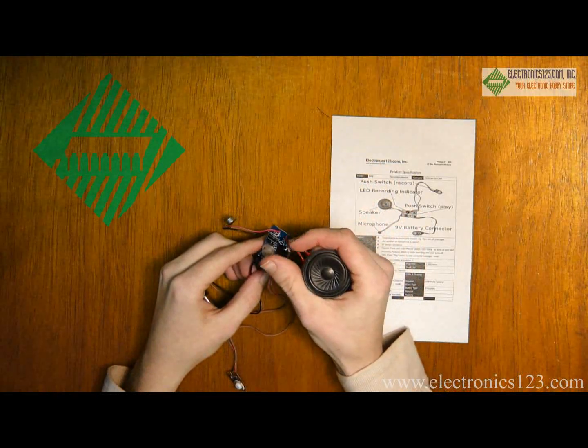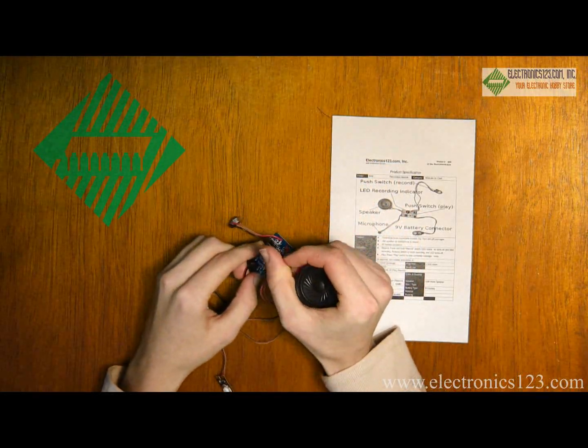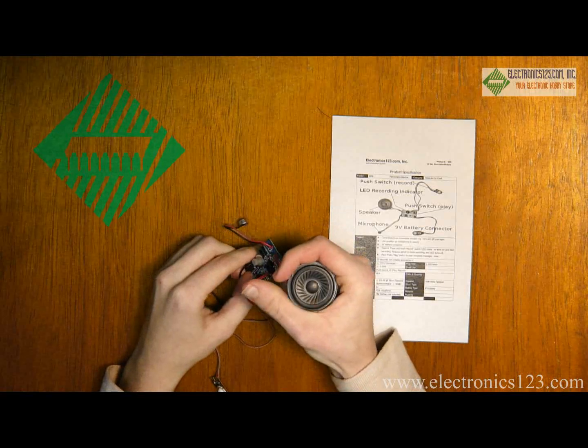A trick to make the BR9 louder is to hold the speaker in an O shape with your hand, creating a speaker box.